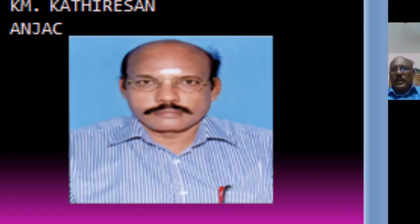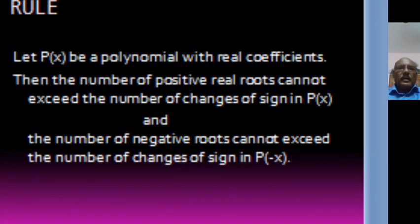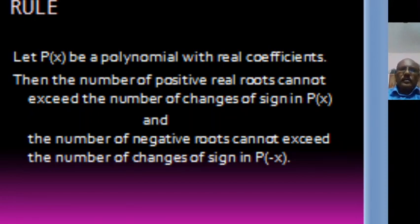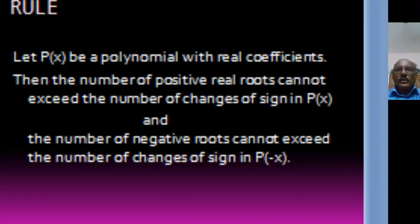That rule is known as Descartes' rule of signs. Suppose P of X is a polynomial with real coefficients, then the number of positive real roots cannot exceed the number of changes of sign in P of X. So first we find the number of changes in sign in the coefficients of P of X. If you know that number, then the number of positive real roots is less than or equal to that number.